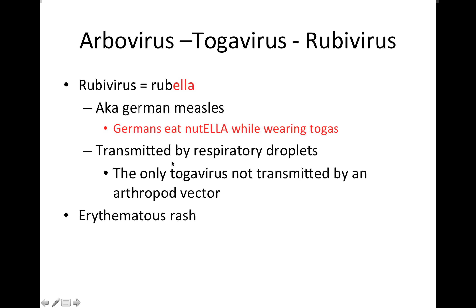This is an important exception. Anytime you have an exception, you always have to know it because those things definitely show up on exams. Rubivirus is transmitted by respiratory droplets — note that this is the only togavirus not transmitted by an arthropod vector. This breaks that arbovirus rule.